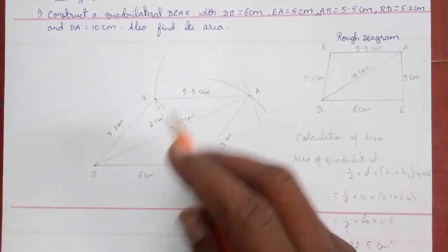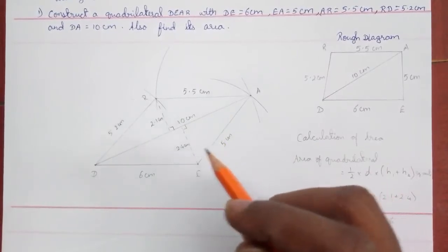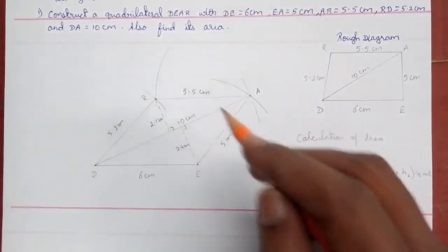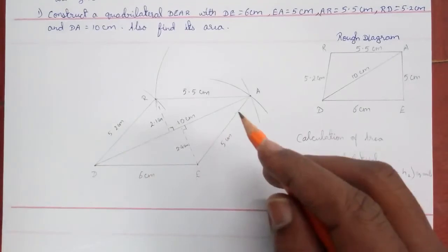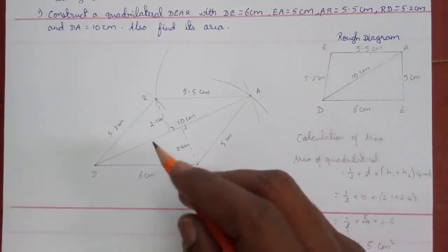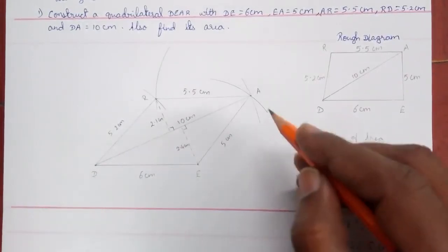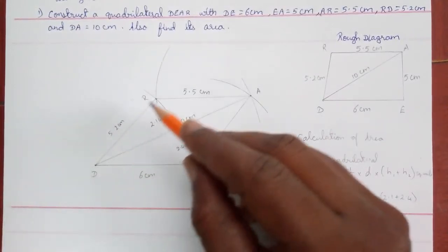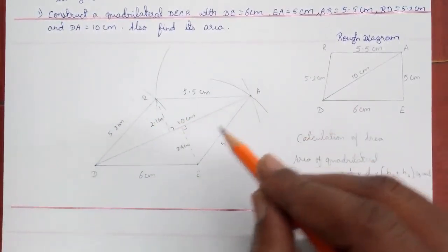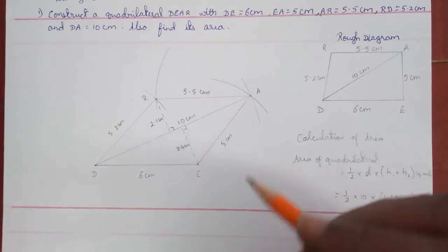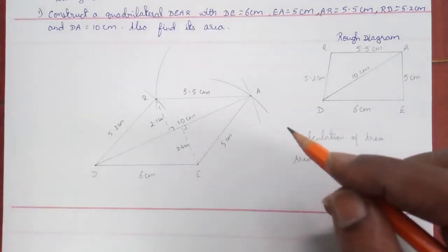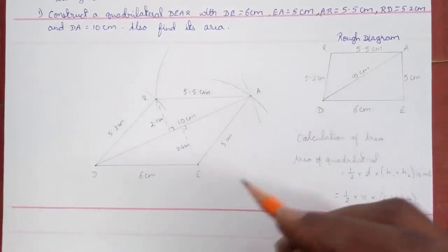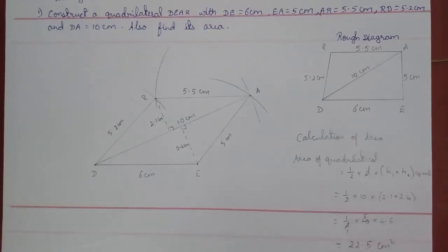In this problem, four sides and one diagonal are given, and we have constructed the quadrilateral DEAR. Make sure you mark all vertices in capital letters and write all measurements on the diagram. The area answer should be in square units — centimeter square. Try to attempt this type of question on your own.